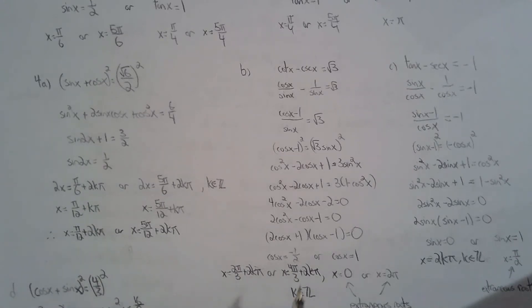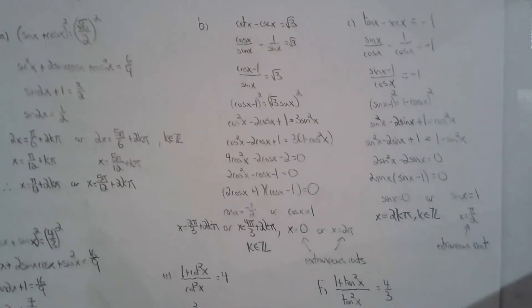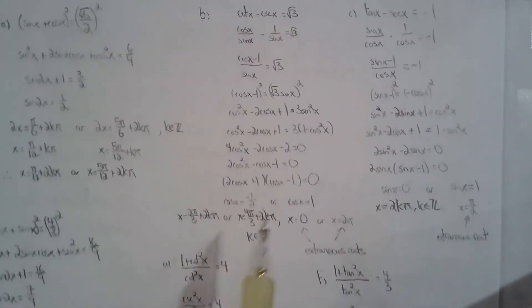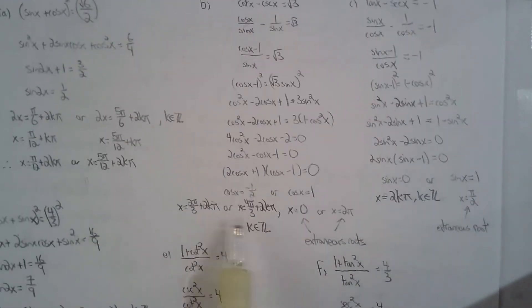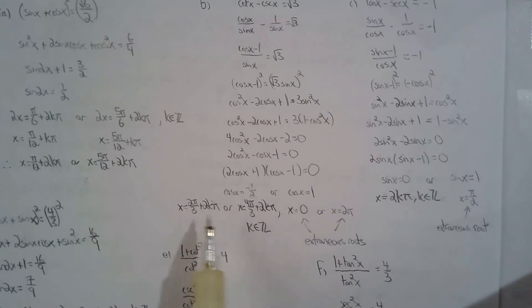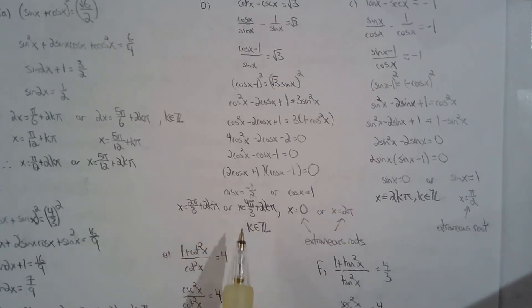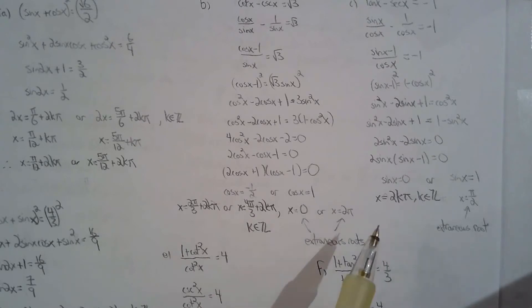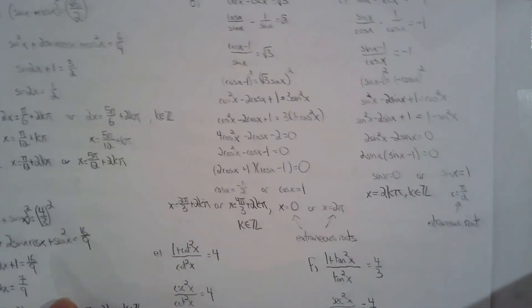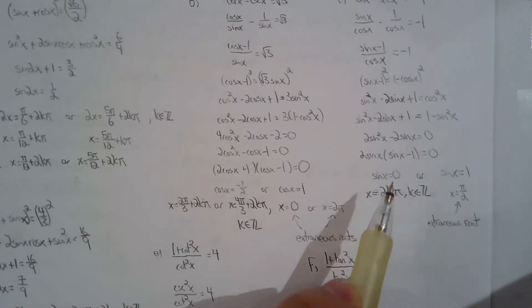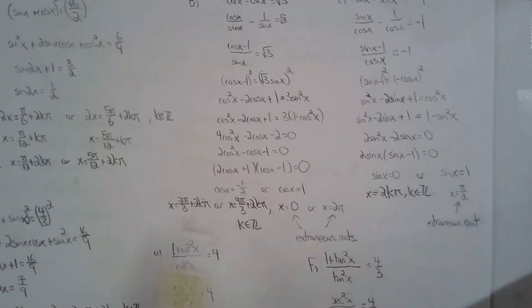So that's for 4b. You can tell there are infinite solutions because x is no longer strictly from 0 to 2 pi. So infinite solutions — be careful, extraneous roots everywhere.